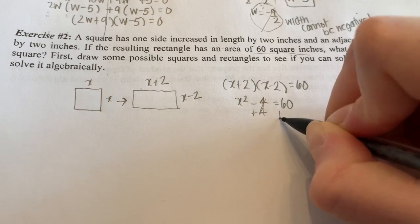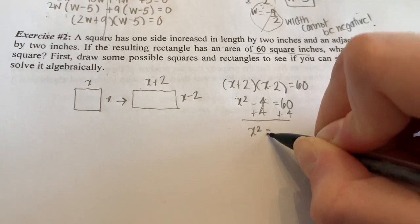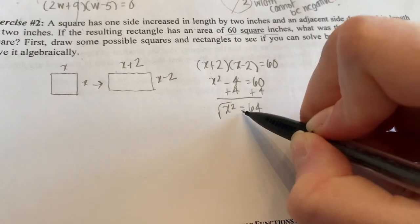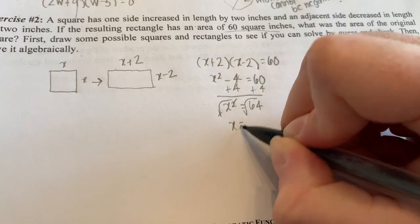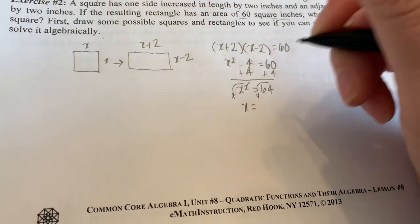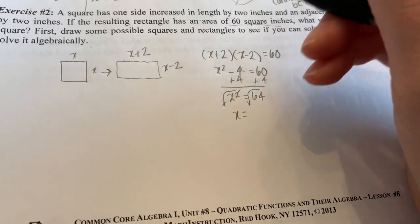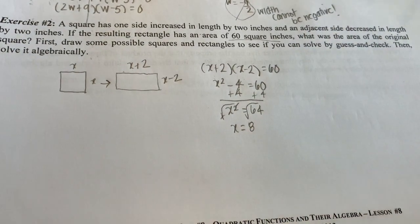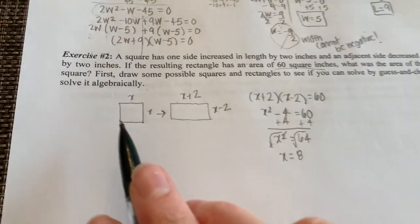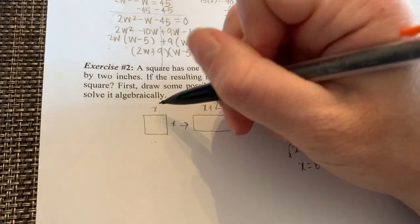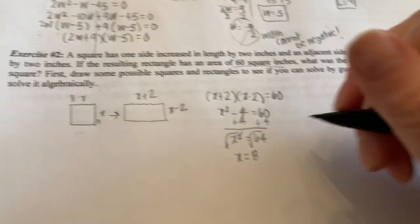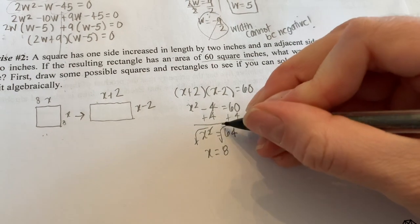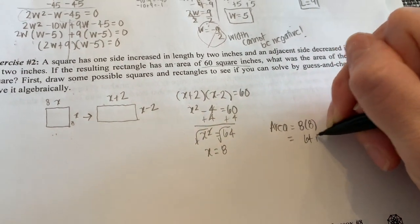Take the square root of both sides. Remember, it's really plus or minus, but since we're dealing with length and width, we don't need to account for the negative. The square root of 64 is 8. So the original sides were equal to 8. The original area was 8 times 8, which is 8 squared — 64 inches squared.